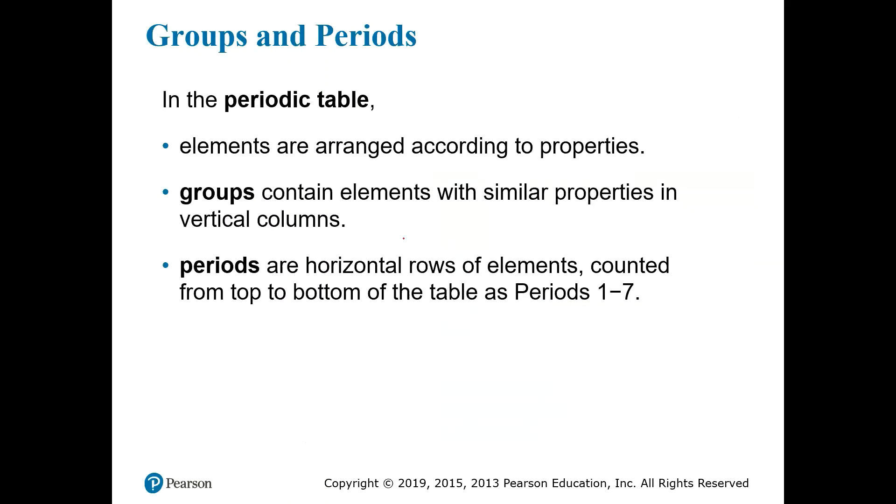In the periodic table elements are arranged according to properties. The chemist who first devised the periodic table had no understanding of the underlying atomic structure of the elements but he was able to see that they fell into different types, different groups, where groups had similar chemical properties. For example all of the elements that were very reactive with water were placed into one group. All of the elements that had formed colorful gases were placed into another group.